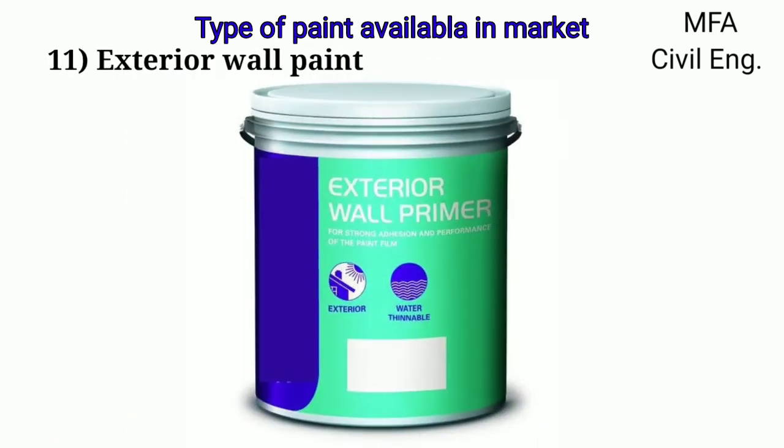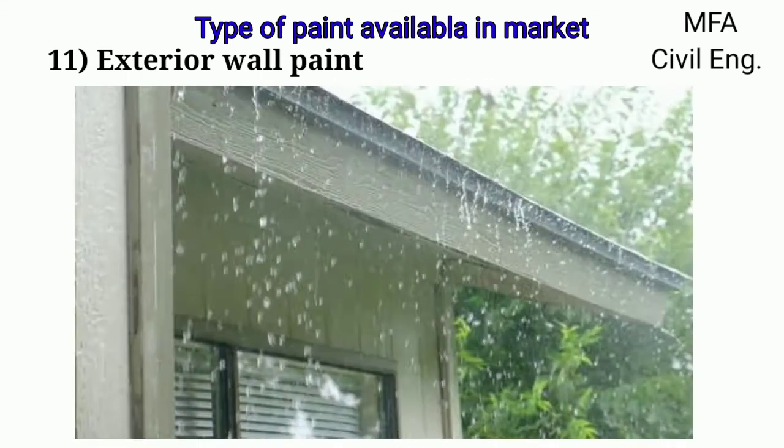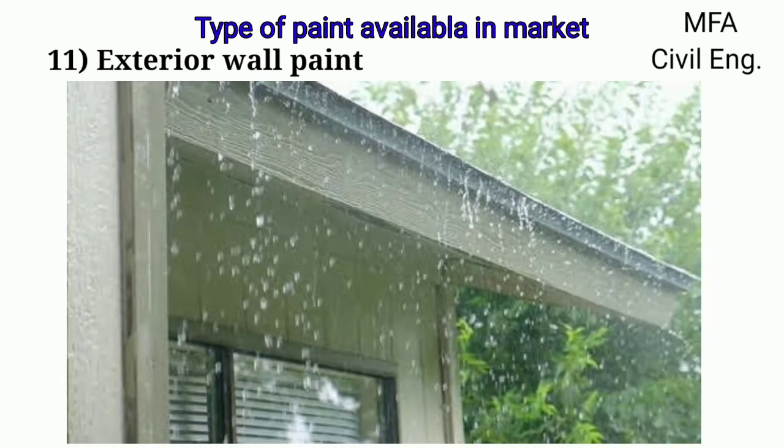Exterior wall paint is an exterior water-based paint. It is specially formulated for exterior use with pure acrylic resins and additives. It offers the best protection to the wall from extreme atmospheric conditions.